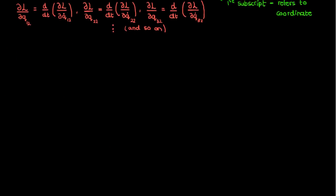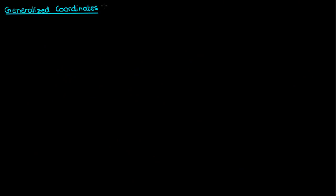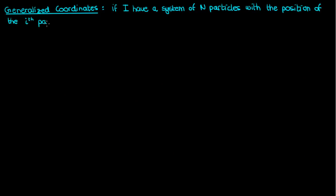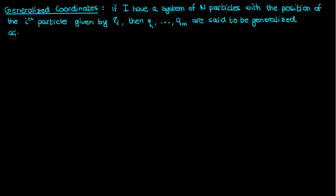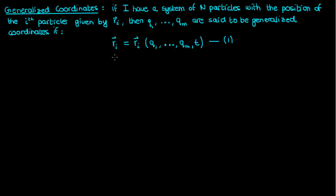Before we move on to talk about constraints, let's spend some time going over generalized coordinates and what they mean in more rigorous terms. If I have a system of n particles with the position of the i-th particle given by the vector ri, then the parameters q1 to qm are said to be generalized coordinates if the position of each of my particles can be fully expressed as a function of just these q parameters and the time t — I'll call this equation 1. If this is the case, then I should also be able to express each of my generalized coordinates in terms of the time and positions of all the particles — I'll call this equation 2.